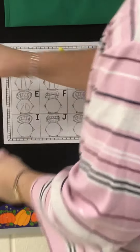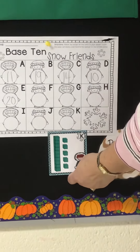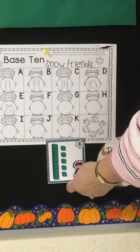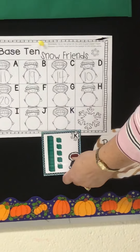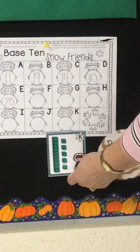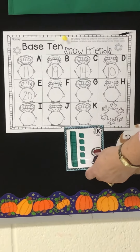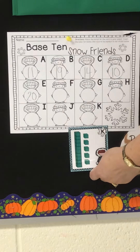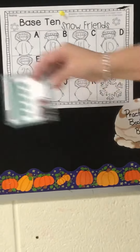And the last one. Count and write the number. And that's all for our Base 10 Snow Friends today. Write the number: 2-0.